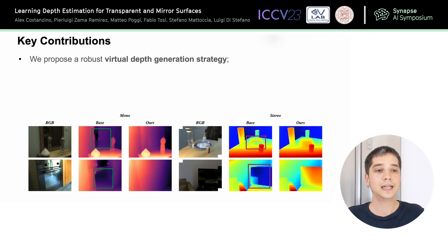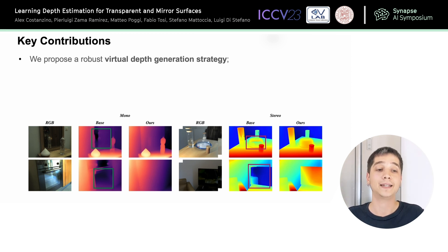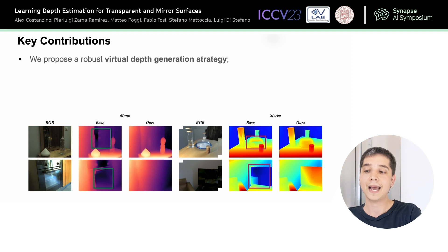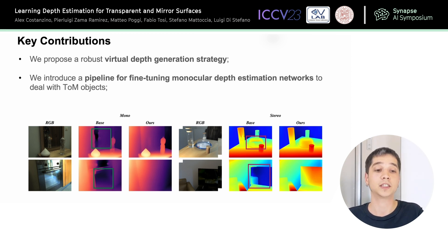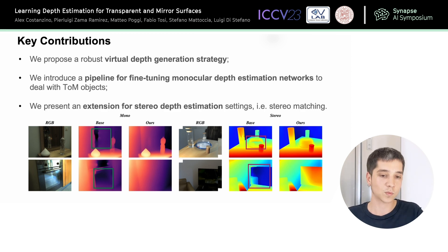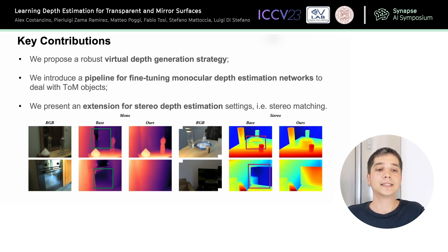Let's see the key contributions of our research. First, we propose a robust annotation strategy — the heart of our approach — that allows us to re-synthesize depth information effectively to build a dataset. Next, we introduce a dedicated pipeline for fine-tuning monocular depth estimation networks to handle transparent objects. Finally, we present an extension tailored for state-of-the-art depth estimation methods, specifically for stereo matching, which broadens the applicability of our approach and opens up new possibilities for depth estimation in challenging scenarios.